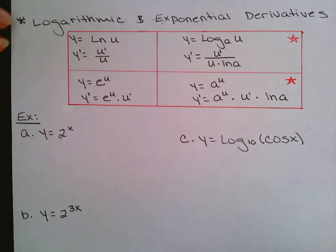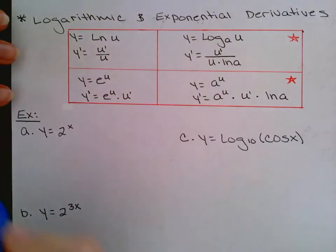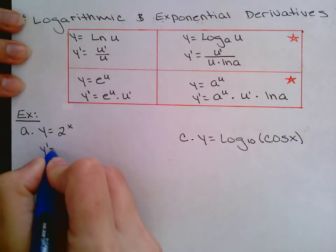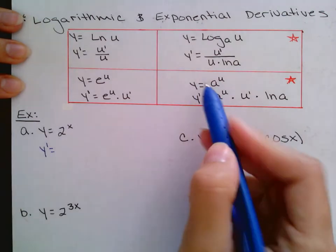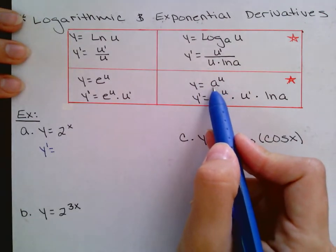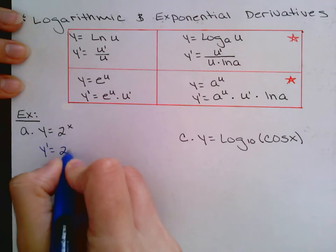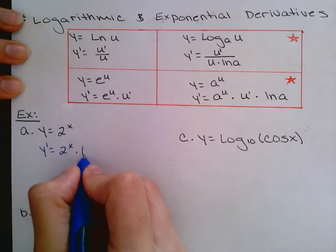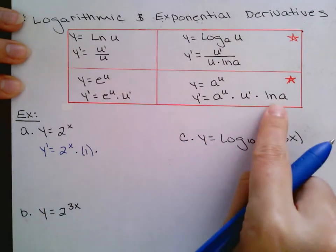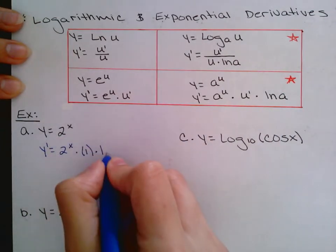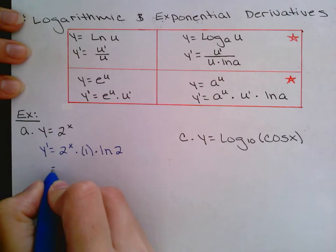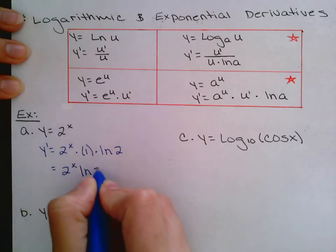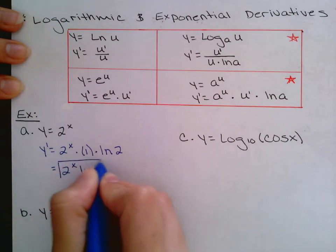These rules are very easy as long as you memorize them. In example a, I have a number raised to a function — that's an a to the u rule. So step one is rewrite, then times derivative of the exponent. The derivative of x is 1, times ln of the base. Here my base is 2, so I have ln of 2. This cleans up to 2 to the x times ln of 2 — nice and simple.